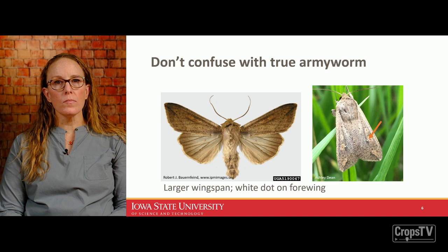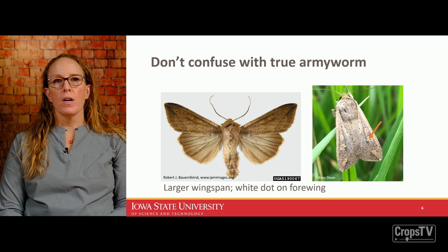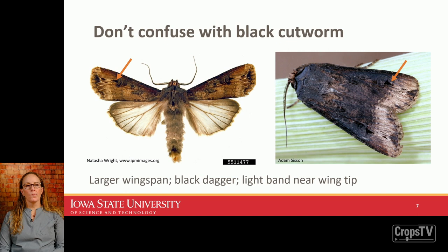You'll probably most often confuse fall armyworm with true armyworm, except the true armyworm is larger with a wingspan over two inches, and the adults have a white dot on the forewing. You could also confuse it with black cutworm — also a migratory species — which is larger with a wingspan over two inches, has a characteristic black dagger on the forewing, and often has a light band near the wingtip.